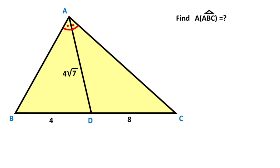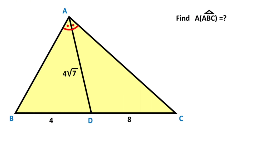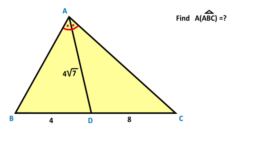Hello everyone. In this video we have one triangle. This length is given as 4, here is given as 8, and the length of AD is given as 4√7. These two angles are given as equal. The question is: what is the area of triangle ABC?